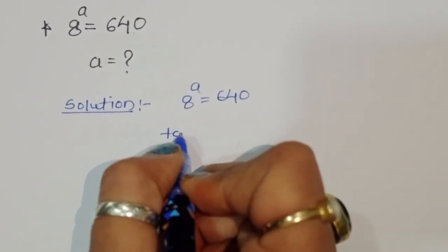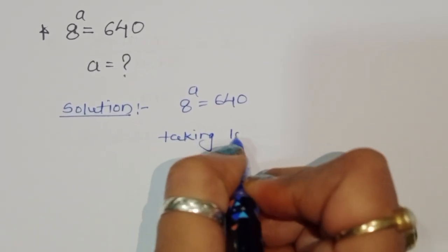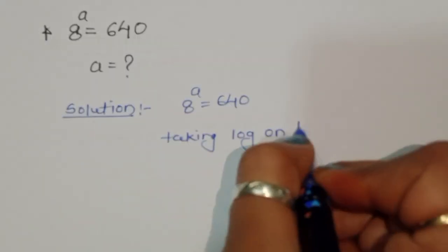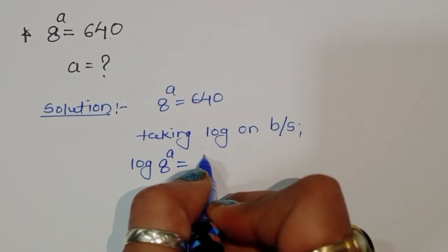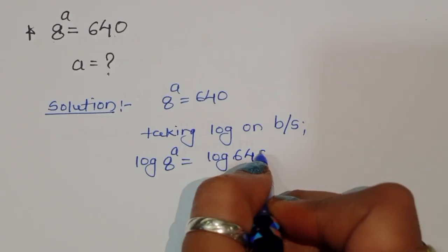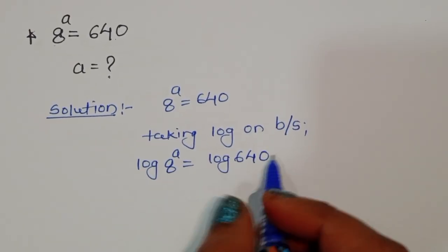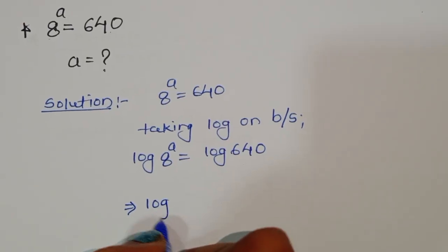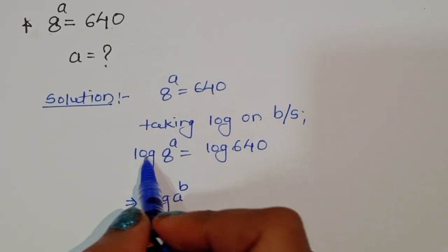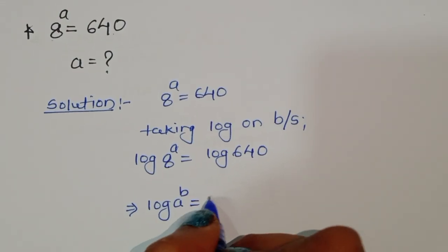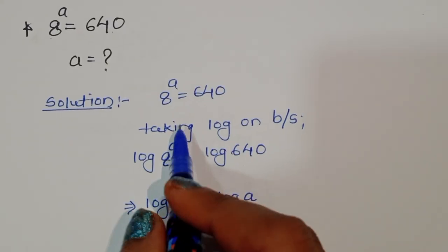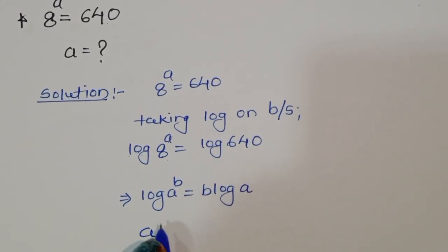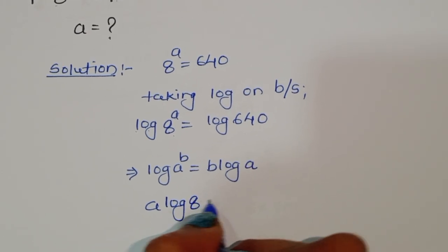Taking log on both sides we get: log of 8 power a is equal to log of 640. Now we use the formula that log of a power b can be written as b times log of a. Using this formula, the left side becomes a times log of 8.